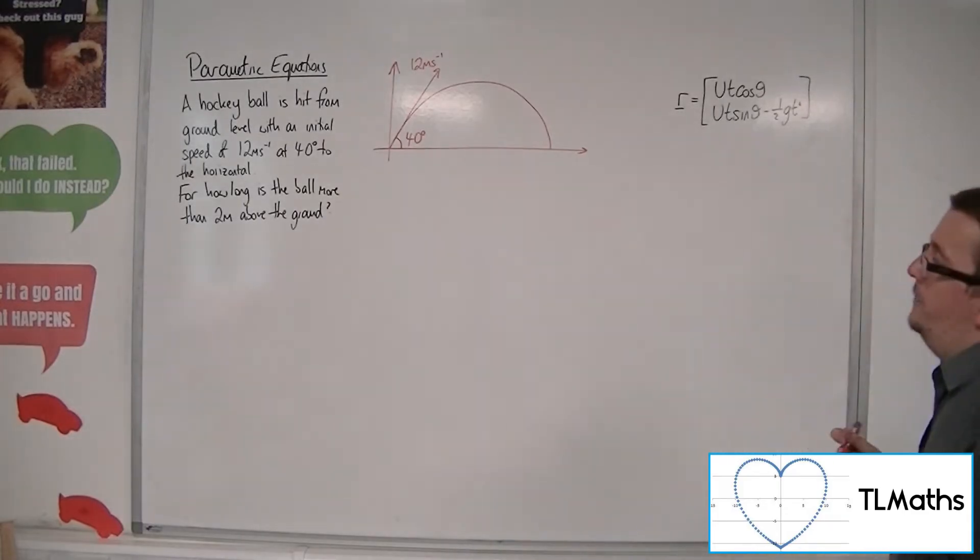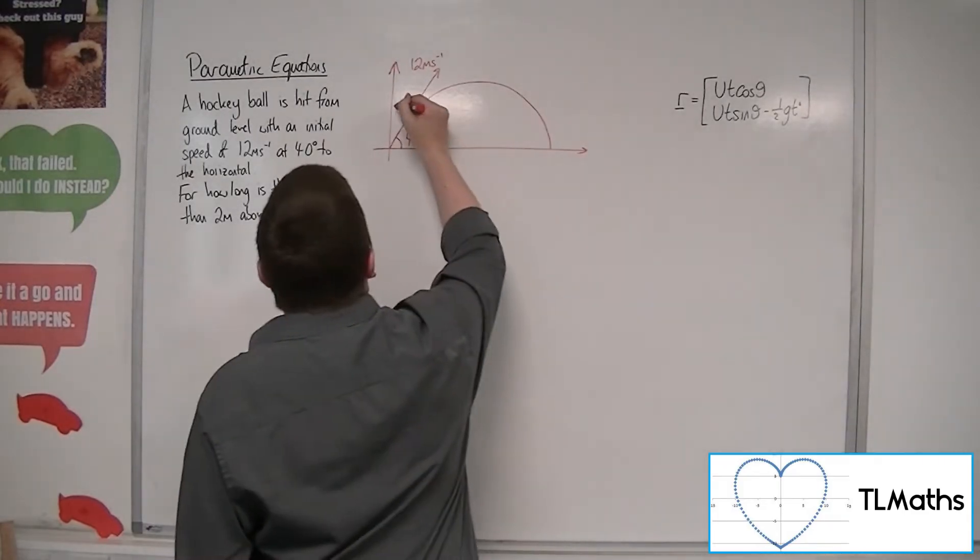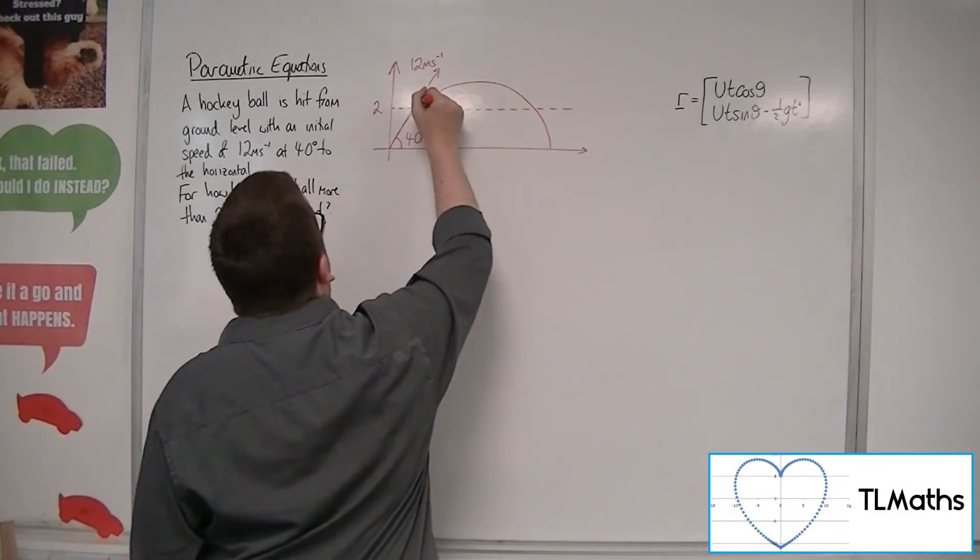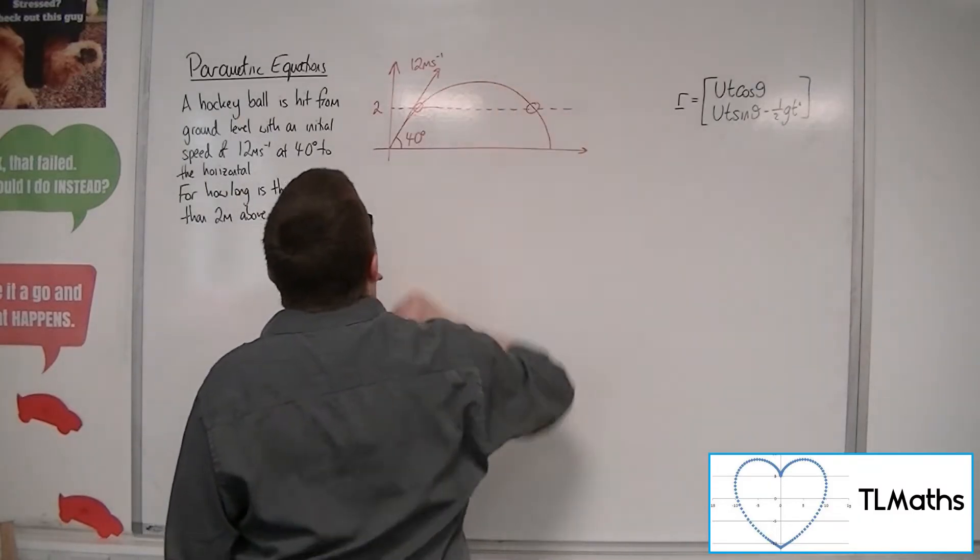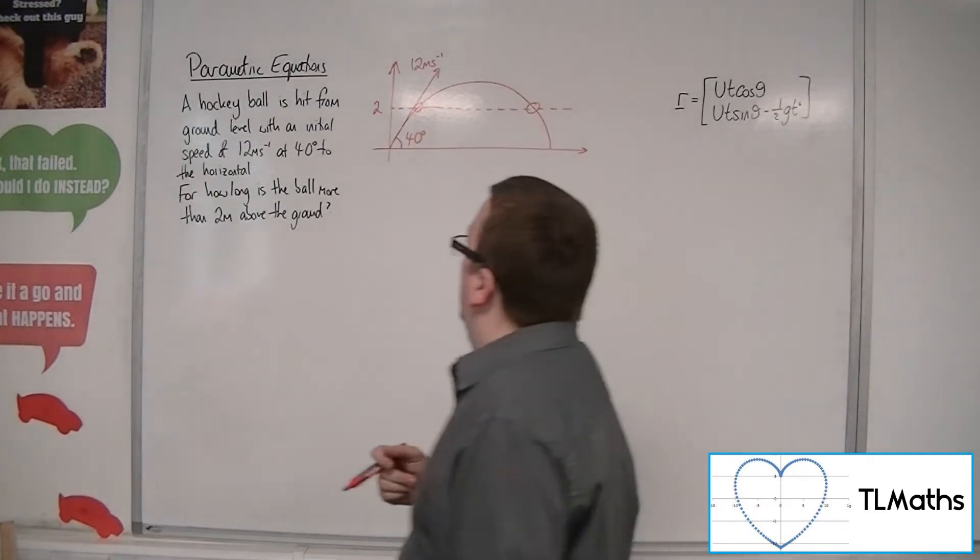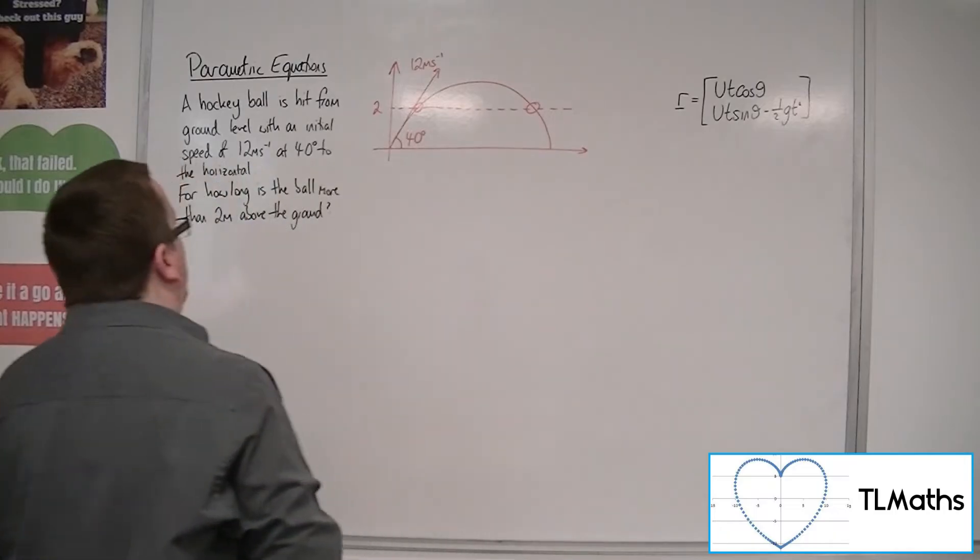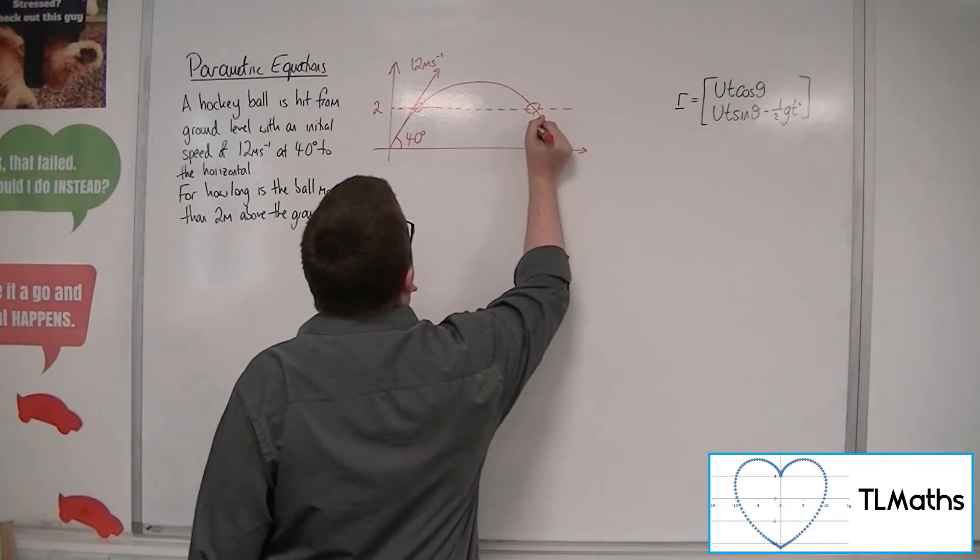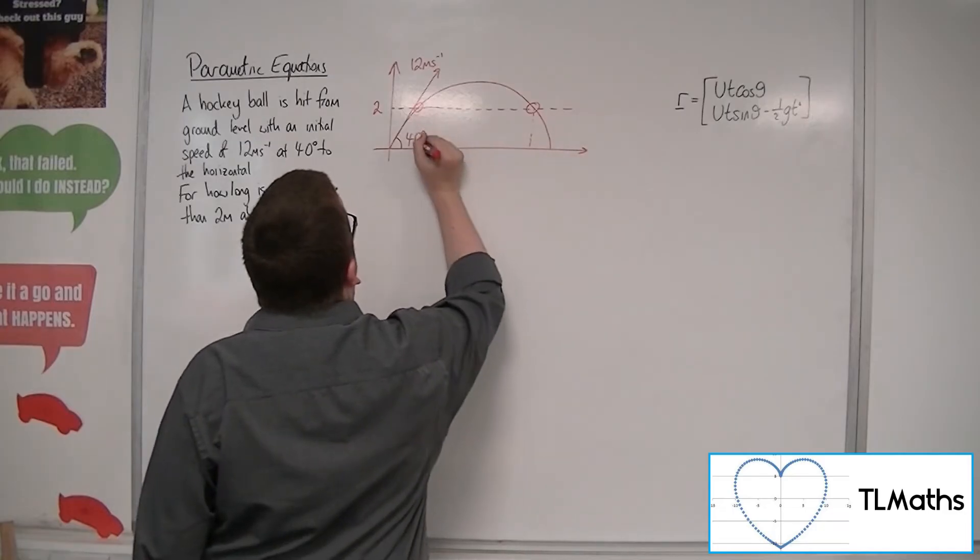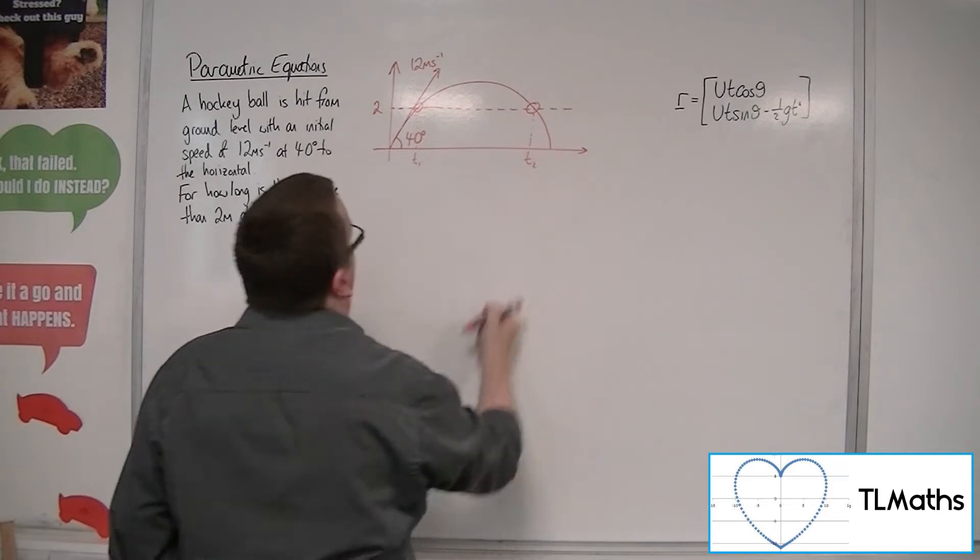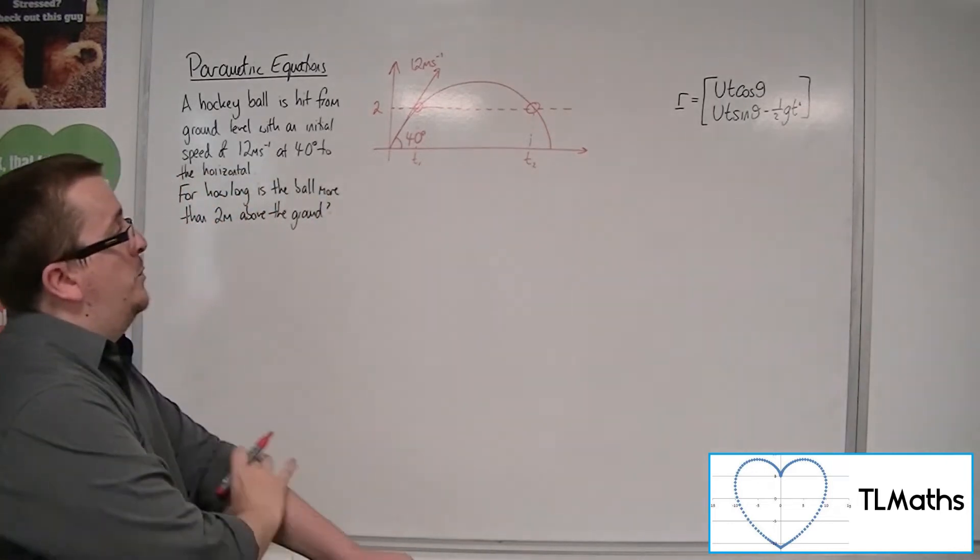And 2 metres above the ground, so at 2, we would be expecting in this situation to have these two points where it is 2 metres above the ground. And we need to find the times for which that is true. So t1 and t2. And then we can find the distance between those two times.